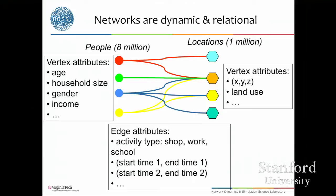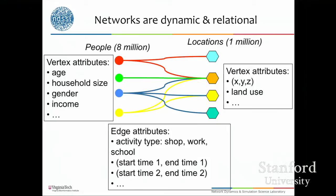As you get more data sets, you can improve this population. The network is designed at the get-go to preserve privacy and keep the anonymity of individuals. These networks are dynamic and relational. In this representation, we have people on one side and locations on the other. People carry attributes measured in census surveys — age, income, household size, gender, and so on. Locations have attributes like what sort of folks work there and how many people are typically there.